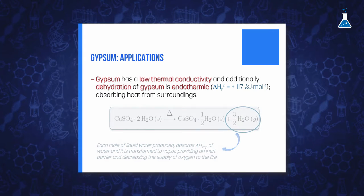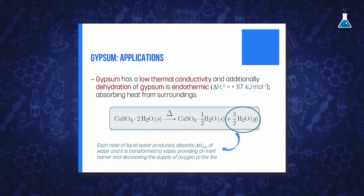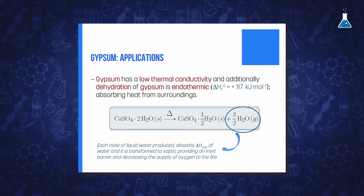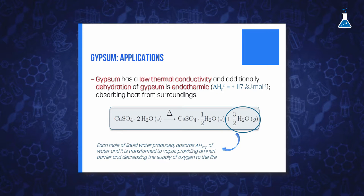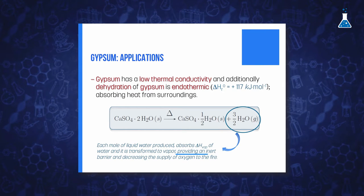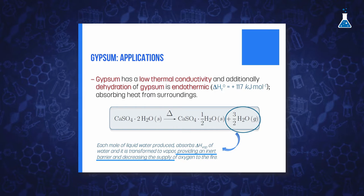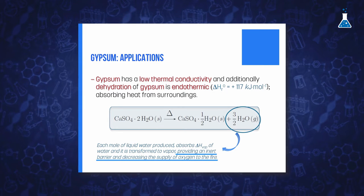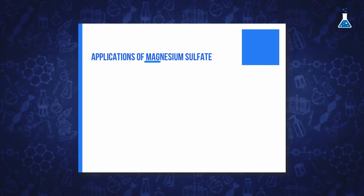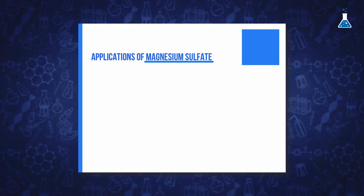Because the reaction of dehydration of gypsum is endothermic, it can absorb heat from the surroundings. Additionally, each mole of liquid water produced absorbs the enthalpy of evaporation, becoming water vapor which provides an inert barrier decreasing the supply of oxygen to the fire.